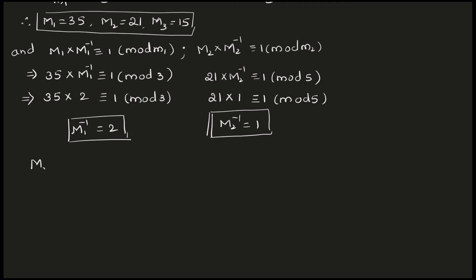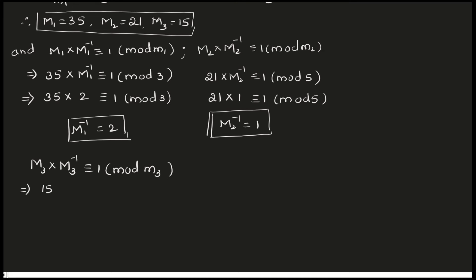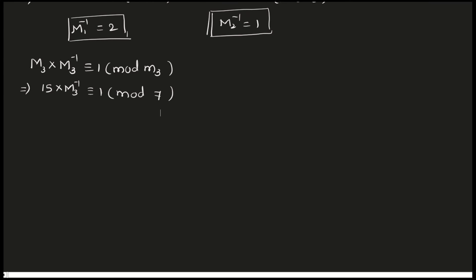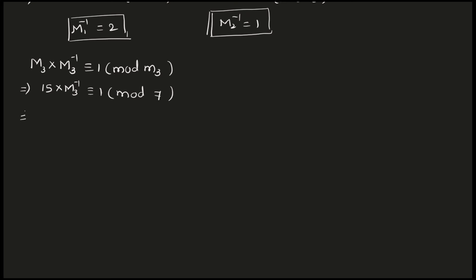Now M3_inverse. M3 into M3_inverse is congruent to 1 mod m3, where m3 is 7. By inspection, 15 into 1 is 15, and 15 divided by 7 gives remainder 1. So M3_inverse is equal to 1. We have now got all the values: a1, a2, a3, M1, M2, M3, and M1_inverse, M2_inverse, M3_inverse.